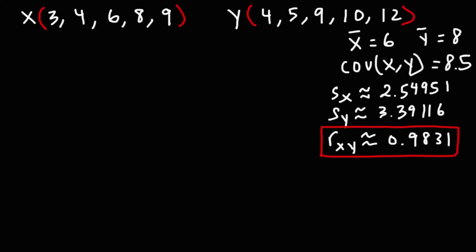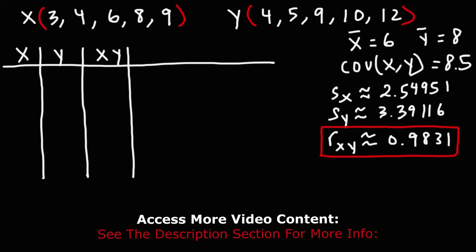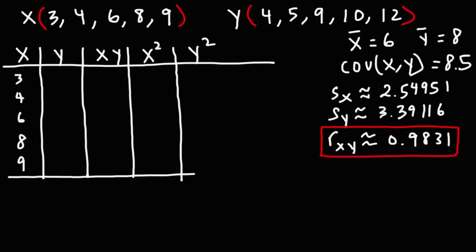Now we'll confirm this answer using the other formula. We make a new table with columns for x, y, the product xy, x squared, and y squared. The x values are 3, 4, 6, 8, 9, and the y values are 4, 5, 9, 10, 12.